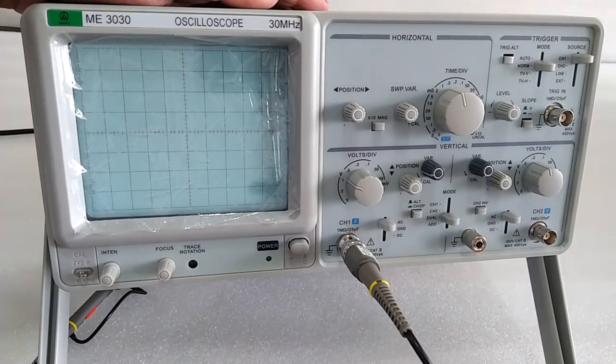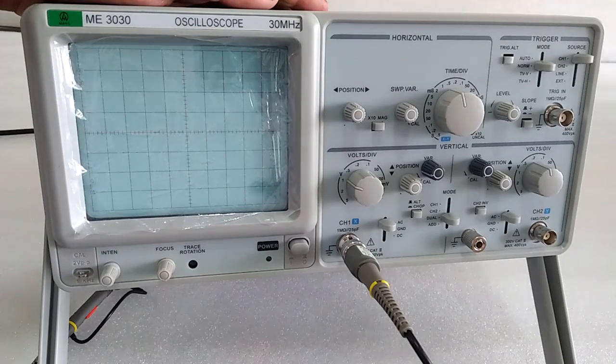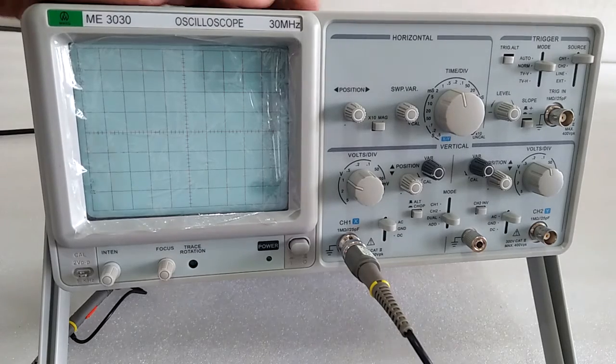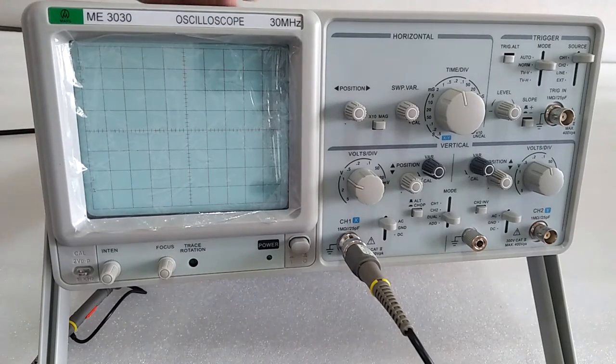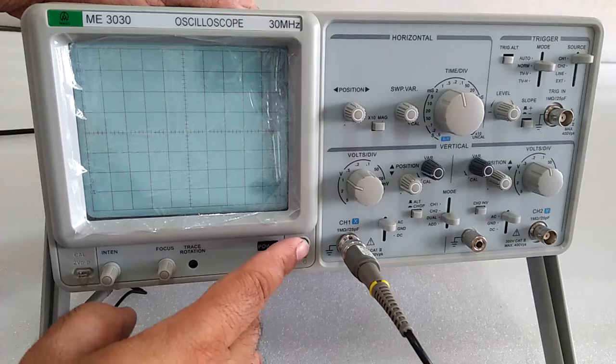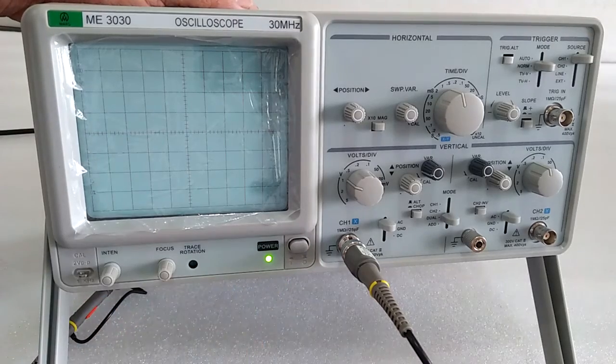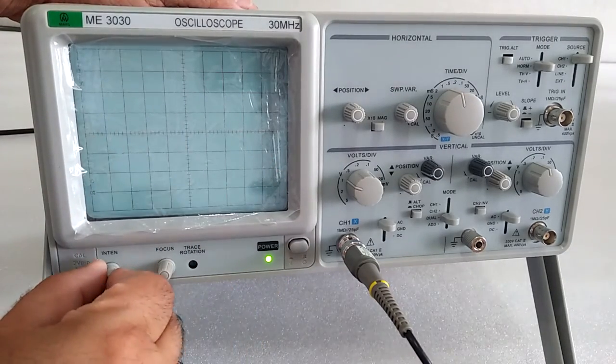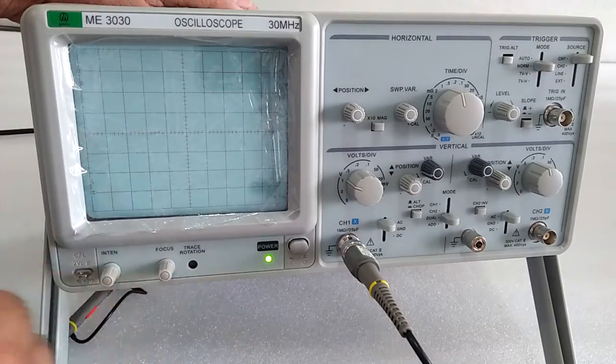This is the oscilloscope MV3030. Today I will explain its working and settings. The main power switch is at the back side. For getting started, you need to get the baseline. Increase the intensity and focus to maximum.